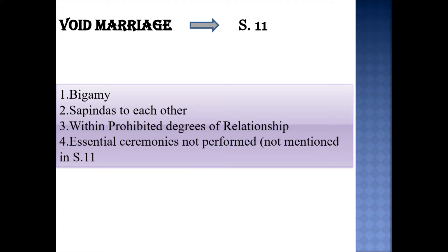Section 5, clauses 4 and 5 talk about sapinda and prohibited degree of relationship. If any person marries his or her sapinda, or a person who is within their prohibited degree of relationship, then again that marriage will be declared void ab initio. Additionally, there is one more condition not specifically mentioned in Section 11 — that is essential ceremonies. If essential ceremonies are not performed in that particular marriage, then that marriage will again be declared void.